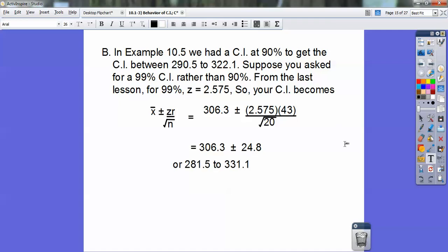306.3 plus 24.8 gets me the 331.1, and 306.3 minus the 24.8 gives me the 281.5. A 90% confidence interval from the last lesson gave me a confidence interval from 290.5 to 322.1. Look at how the 90% confidence interval made it smaller. Doesn't that make sense if I want a bigger confidence interval, a 99, it's going to spread it out more, your confidence interval.